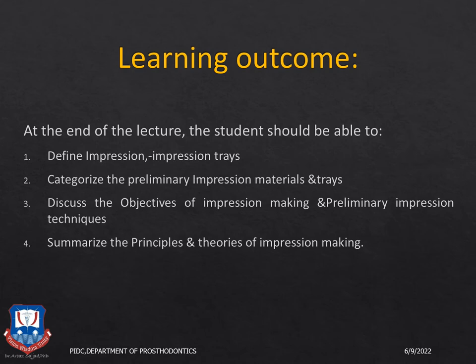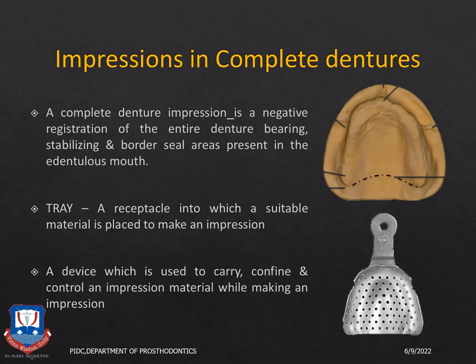Coming to impressions in complete dentures: a complete denture impression is a negative registration of the entire denture bearing, stabilizing, and border seal areas present in the edentulous mouth — that is the denture bearing area with the peripheral borders. How it looks in the mouth should be exactly like a negative replica within the impression that you have just made.